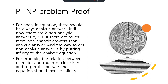So we can prove the P vs NP problem. For an analytic equation, there should always be an analytic answer. Until now, there are two known non-analytic answers: pi and e. But there are many more non-analytic answers than analytic answers. The way to get non-analytic answers is by pulling infinity into the analytic equation. For example, the relation between diameter and circumference of a circle is pi, and to get this answer, the equation should involve infinity.